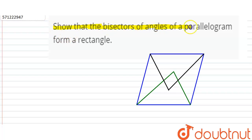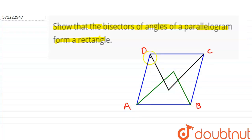Hello friends. The question is: we have to show that the bisectors of angles of a parallelogram form a rectangle. Suppose this blue parallelogram is ABCD — A, B, C, and D. The green line is the bisector of angle A, the green line is the bisector of angle B, the black line is the bisector of angle D, and this is the bisector of angle C.